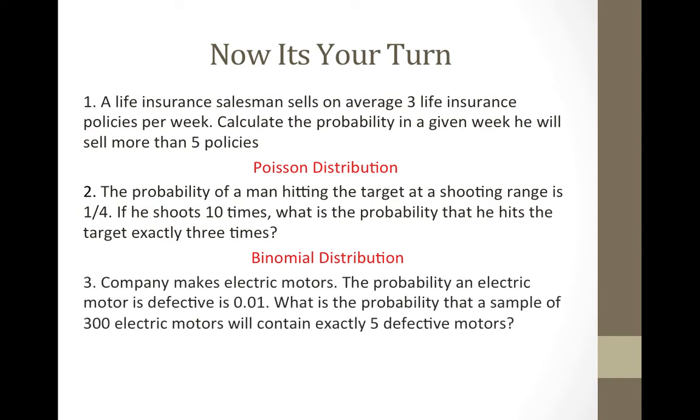A company makes electric motors. The probability an electric motor is defective is 0.01. What is the probability that a sample of 300 electric motors will contain exactly five defective motors? The answer in this case would be Poisson distribution. However, it can also be binomial, but considering how large the sample space is, it would be more convenient to use the Poisson.